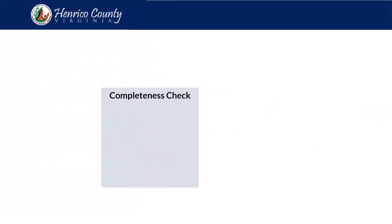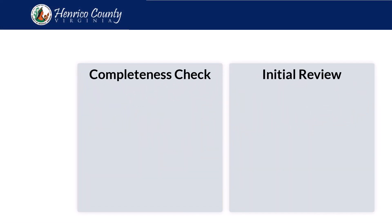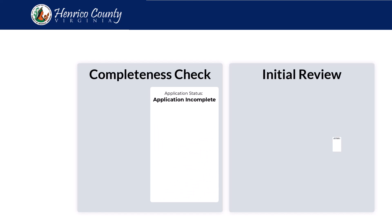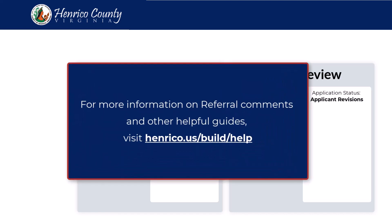During the completeness check and initial review, your application may appear in the status of Application Incomplete or Applicant Revisions. Please note, this video does not cover corrections to be made as a result of referral comments. For more information on that process, please visit the Help Using BUILD Henrico webpage.